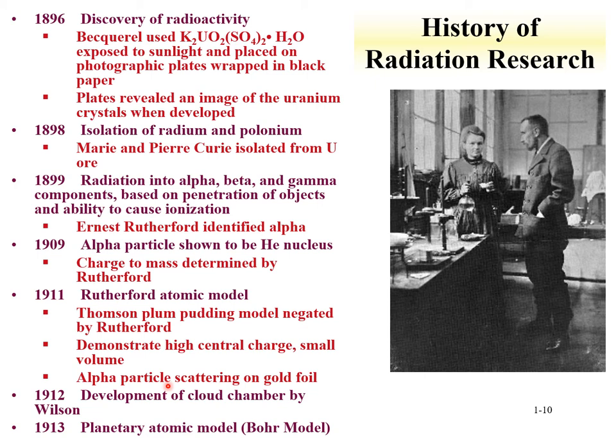In 1911, the Rutherford atomic model was established. Thompson's plum pudding model was negated by Rutherford, who demonstrated a high central charge in a small volume through alpha particle scattering on a gold foil. From this scattering, the hypothesis was developed that mass must be concentrated in a nucleus where the particle would impinge and scatter back. Detection of particles was expanded upon in 1912 by the development of the cloud chamber, and a planetary atomic model was postulated by Bohr in 1913.